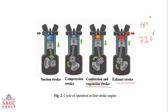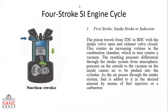The cycle of operation for an ideal four-stroke SI engine consists of suction, compression, expansion or power stroke, and exhaust stroke. Let's see these four strokes in detail.